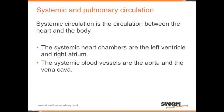Systemic circulation is the circulation of blood between the heart and the body. The systemic heart chambers are the left ventricle and the right atrium. The systemic blood vessels are the aorta and the vena cava.